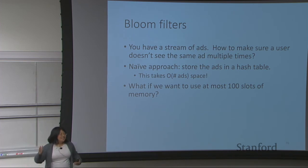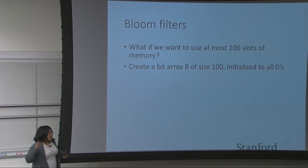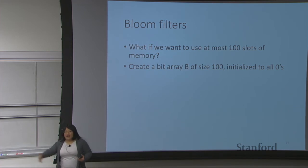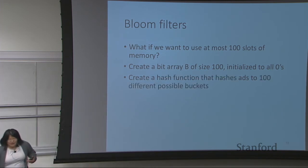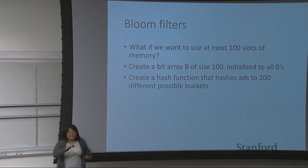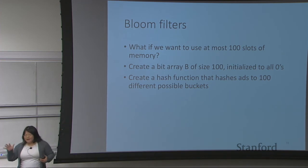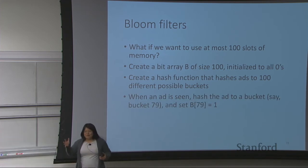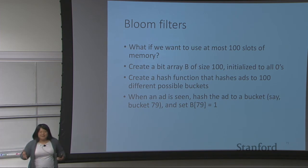So what if we want to use a very small amount of memory — say a hundred slots or a thousand slots? What you can do is have a bit array, an array that is either zero or one everywhere, with maybe a hundred or a thousand entries, initialized to all zeros. In addition to this bit array, you have a hash function that hashes ads to numbers from zero to 99, assigning one number to each ad, with as many possible buckets as there are indices in the bit array. When you see an ad, you hash it to one of these numbers — say bucket 79 — and then set the corresponding position in the bit array to one.